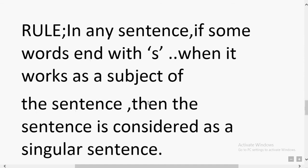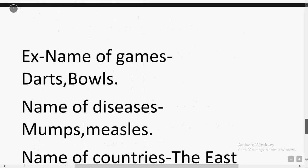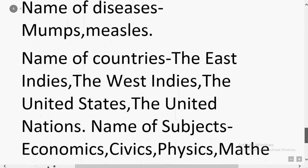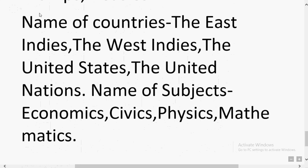Rule 4 (last rule for this video): In any sentence, if some words ending in 's' are used as the subject of the sentence, the sentence is considered singular. Examples include: names of games — darts, bowls; names of diseases — mumps, measles; and names of countries. These words end in 's' but are still treated as singular sentences.